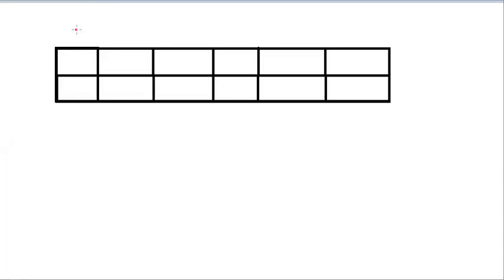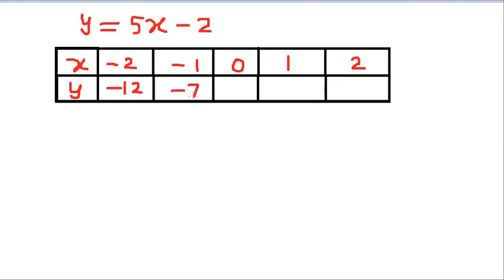We are going to study about graphing a straight line. Assume the equation y equals 5x minus 2. This one is x, this one is y. X values range from minus 2 to plus 2. Therefore this one is minus 12, also given minus 7, this one also given, this one also given.